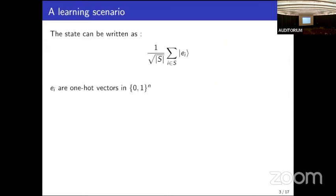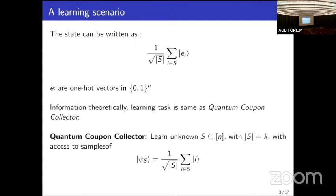The resultant state looks like a superposition over ket e_i's, where each e_i is a one-hot vector where a one corresponds to an excited state and zero corresponds to the ion being in the ground state. Information-theoretically, learning from these samples is equivalent to the quantum coupon collector problem, where instead of ket e_i's you are given access to a superposition over ket i's belonging to S.